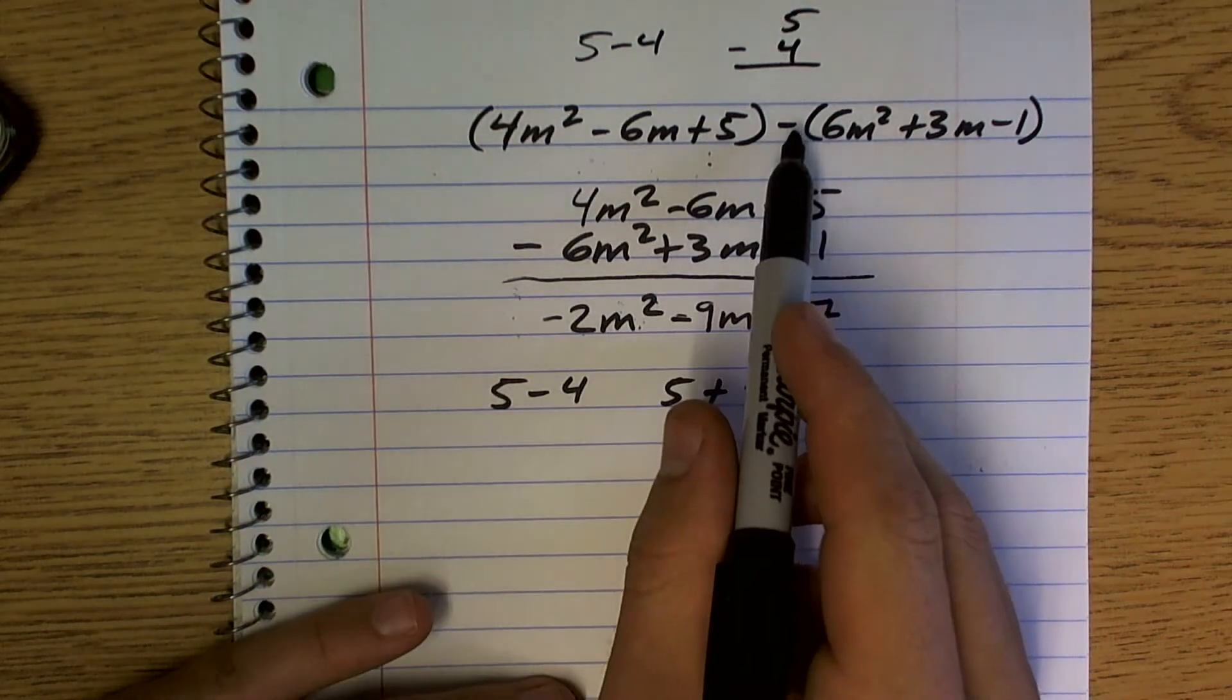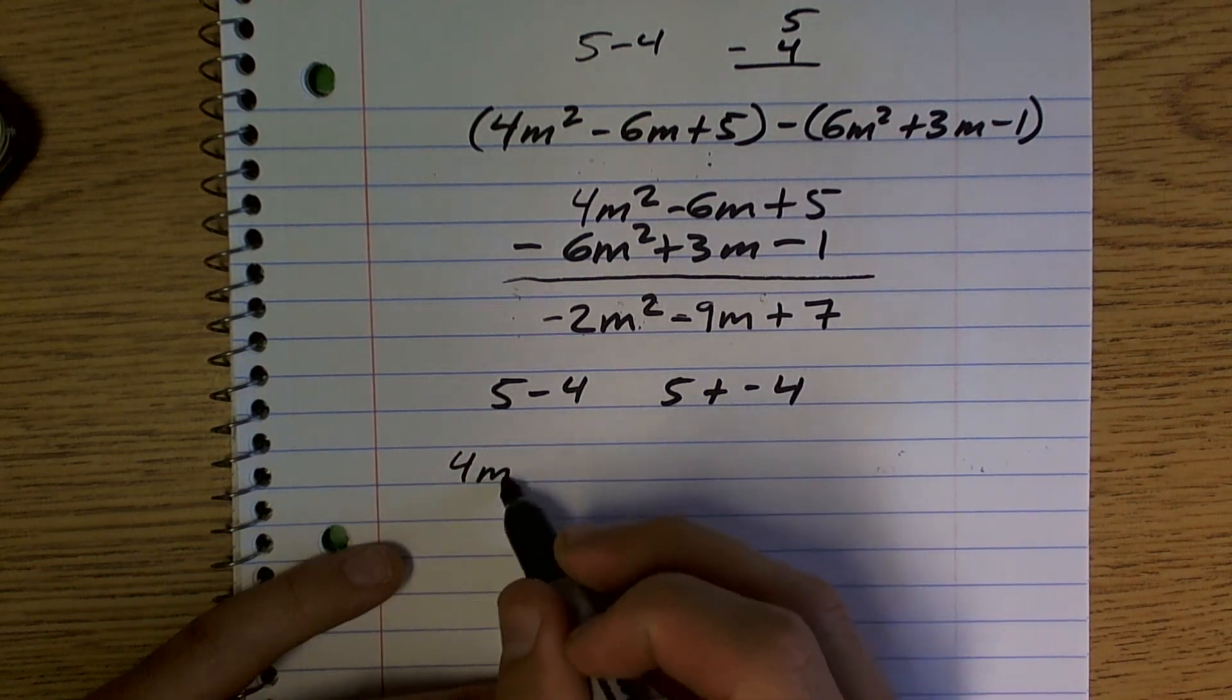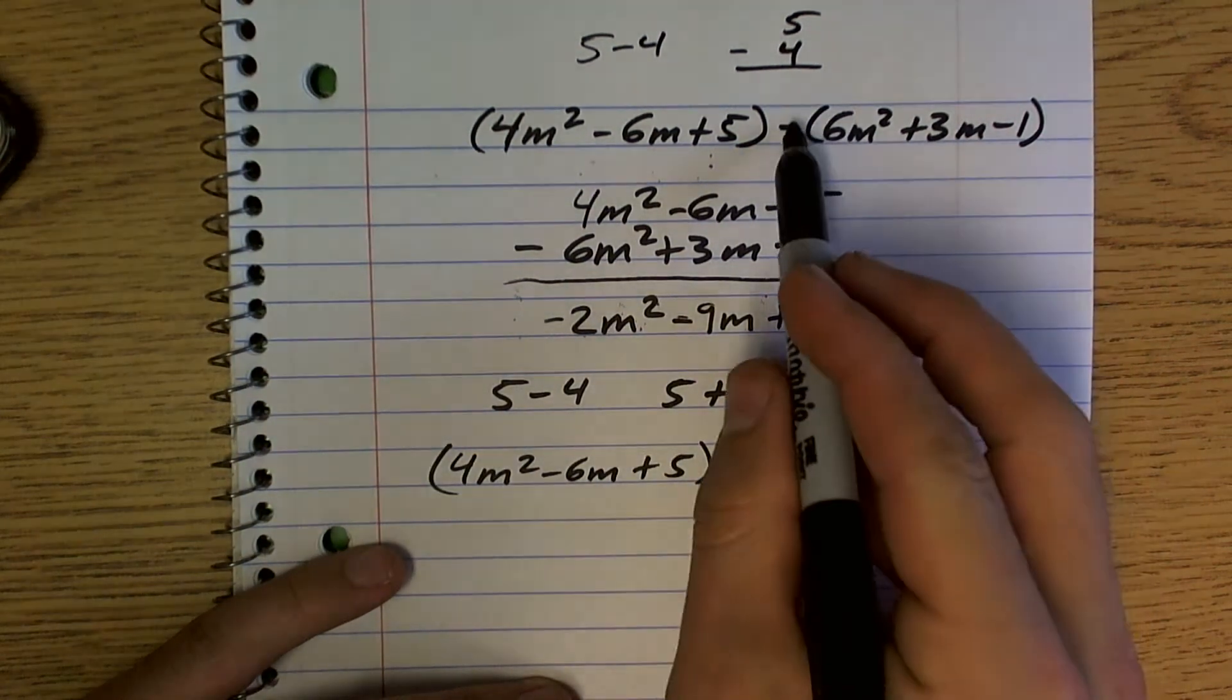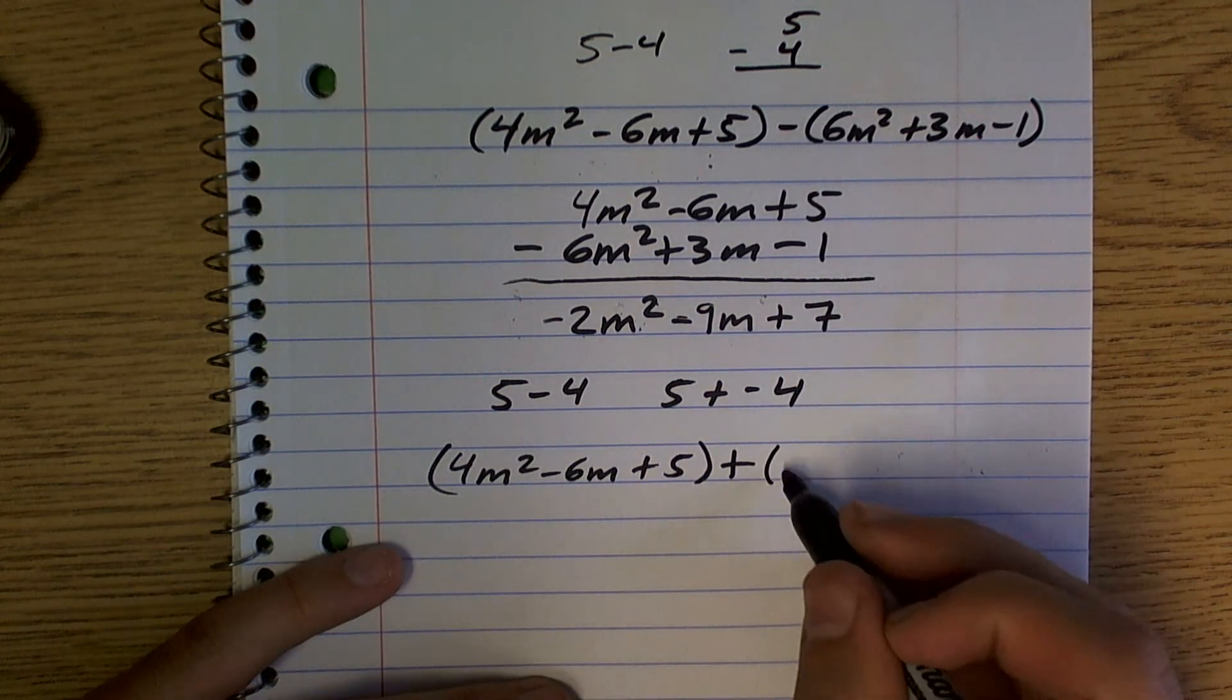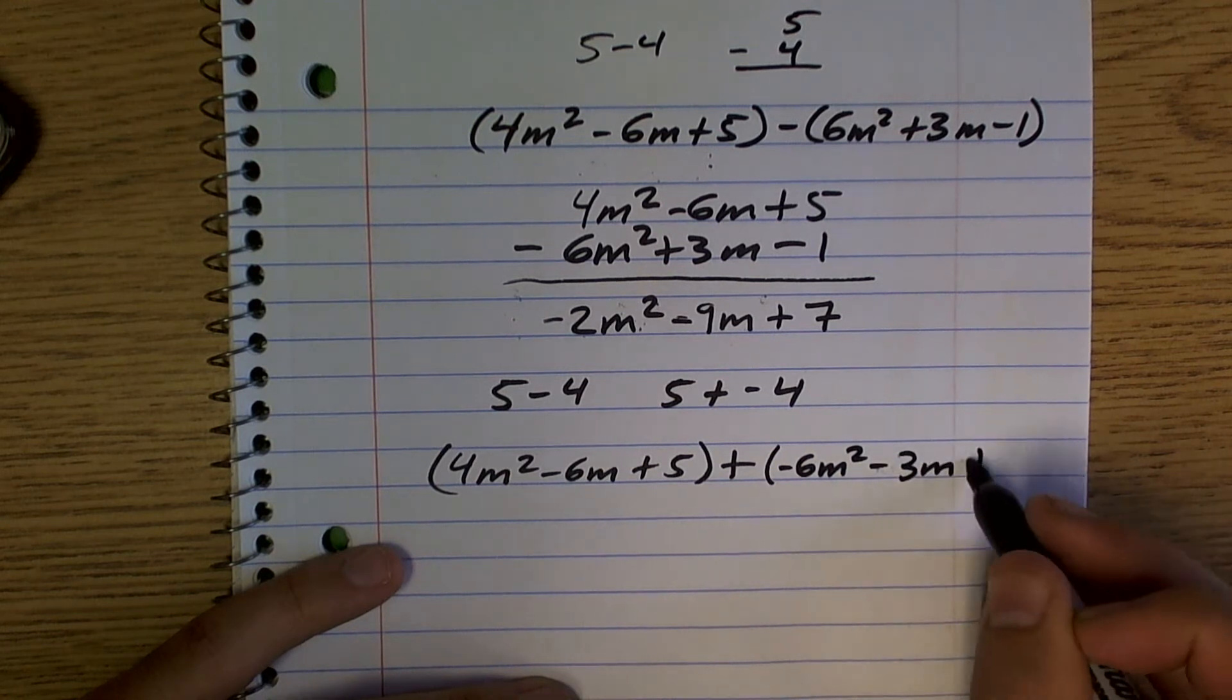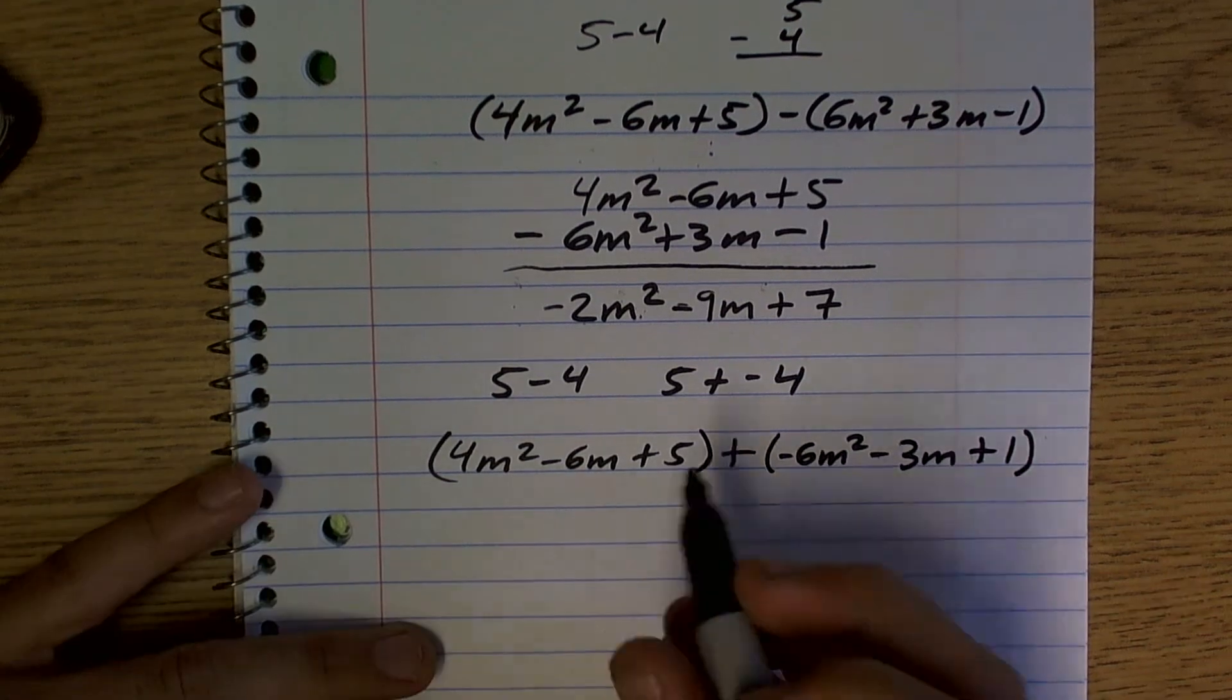So what I can do is I can also write this as an addition problem. I can write this as 4M squared minus 6M plus 5 plus, and I'm going to change this to a plus, and I'm going to make this the subtraction of all these numbers. Negative 6M squared minus 3M plus 1. Now, I'm still going to do the vertical method, but now I can add.